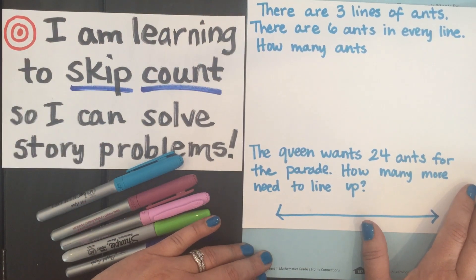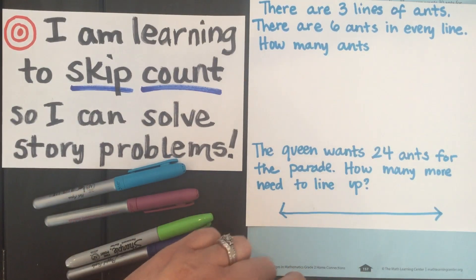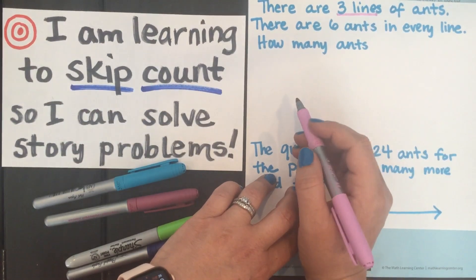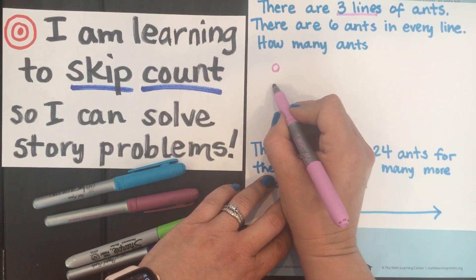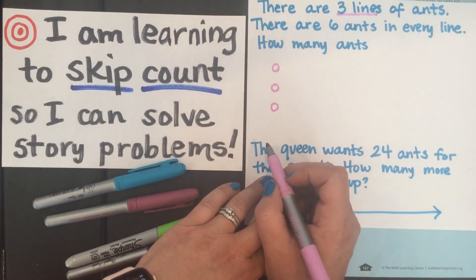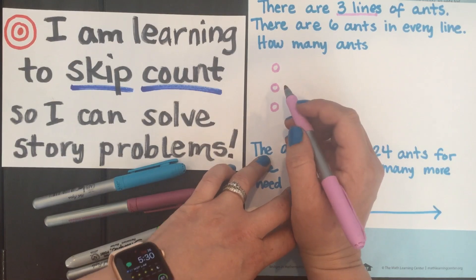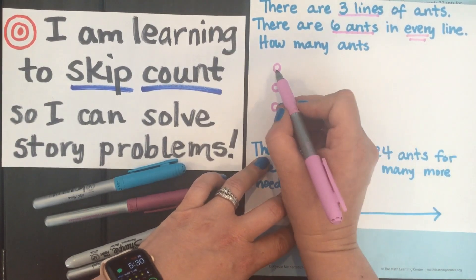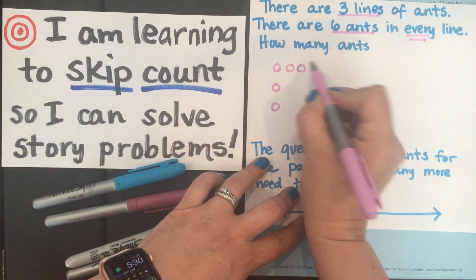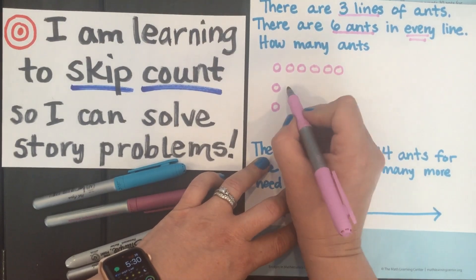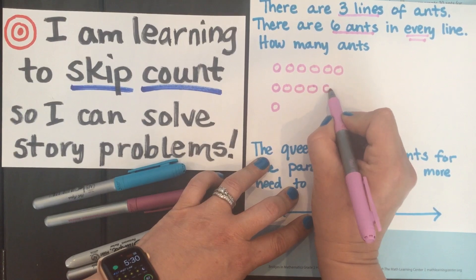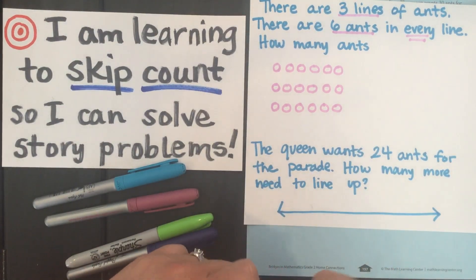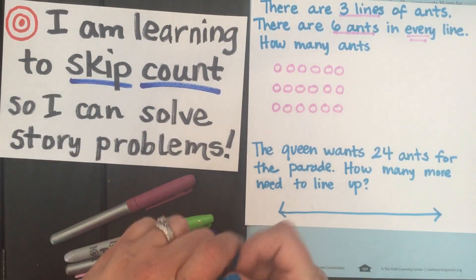Here's what it says: there are three lines of ants. If I'm drawing my math picture and organizing it by rows and columns, that will help me skip count a lot easier. So I have three lines — here's my first line, my second line, and my third line. I'm not drawing a detailed picture; I'm just drawing a circle to represent an ant because it's a math picture. Then it says there are six ants in every line. So I fill in six in the first line, six in the second line, and six in the third line.